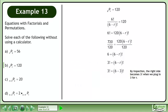By inspection, the right side becomes 3 factorial when we plug in 3 for r. When r equals 3, the original equation 6Pr equals 120 will hold true.